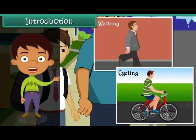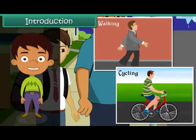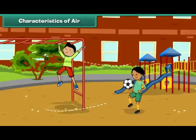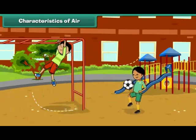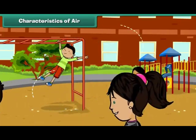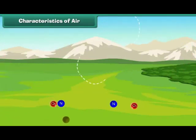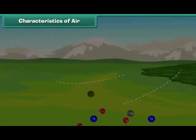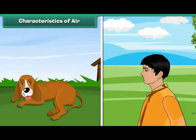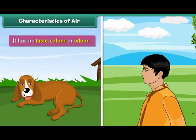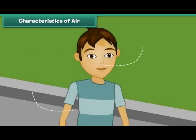In this lesson you will learn about air and its pollution. We are surrounded by air. Air is a mixture of gases and other particles. It is essential for the survival of living things. All living things breathe in and breathe out air. It has no taste, color, or odor. We cannot see it, but we can feel it.